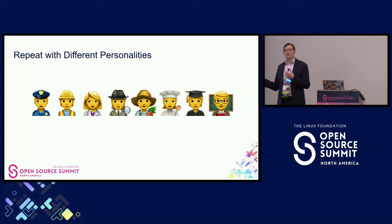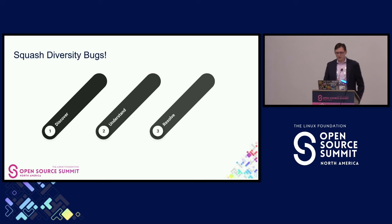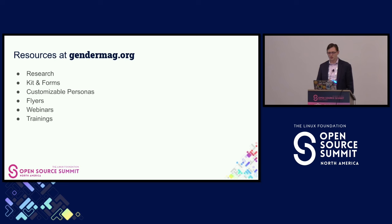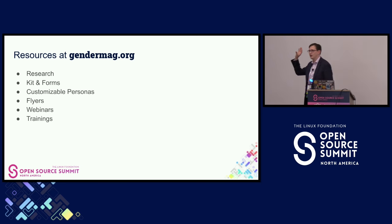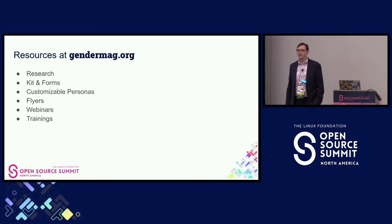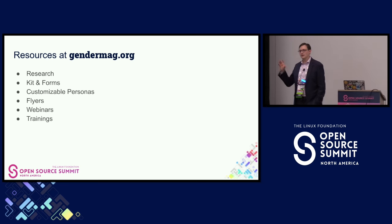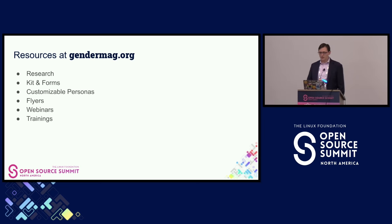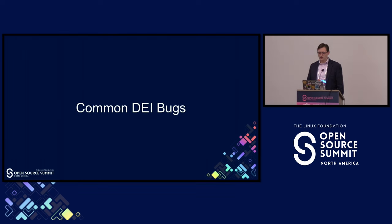That's one way to find those DEI bugs, and then you can start thinking about resolving them. In short, there are three steps, and there's a process you can follow to discover and resolve the DEI bugs. If you are looking for the forms I briefly went through, they're on the GenderMAG website, where the personas you can put yourself in are well described.